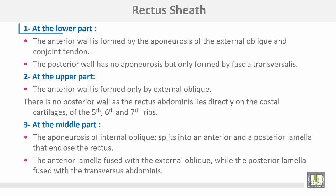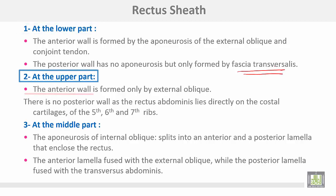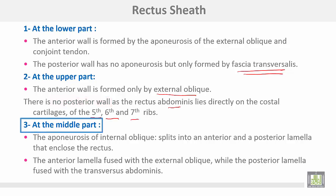Regarding the rectus sheath, at the lower part the anterior wall is formed by the aponeurosis of the external oblique and the conjoined tendon; the posterior wall has no aponeurosis but is only formed by the fascia transversalis. At the upper part, the anterior wall is formed by the external oblique muscle only, and there is no posterior wall, as the rectus abdominis muscle lies directly on the costal cartilages of the 5th, 6th, and 7th ribs.